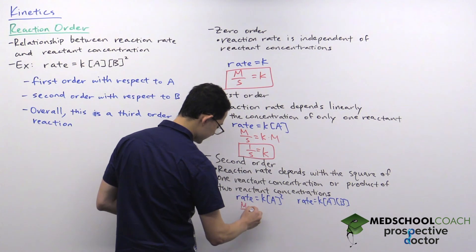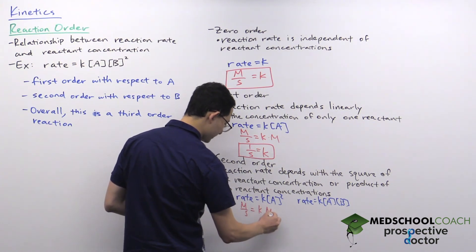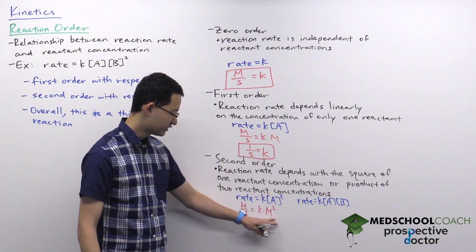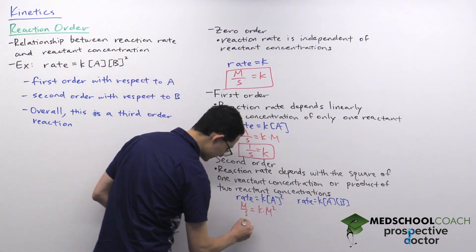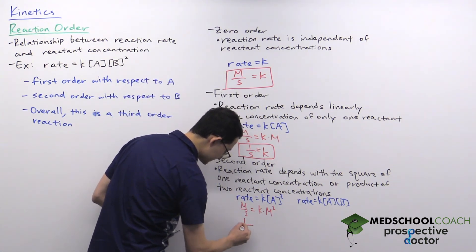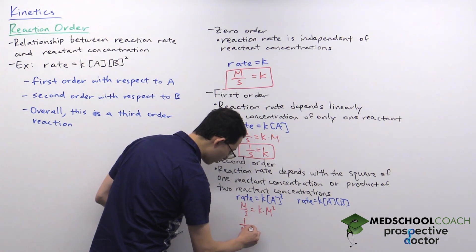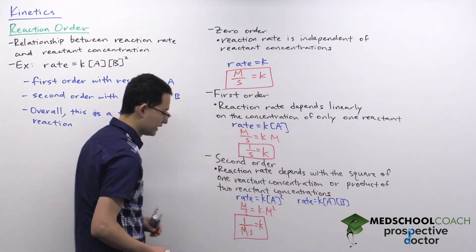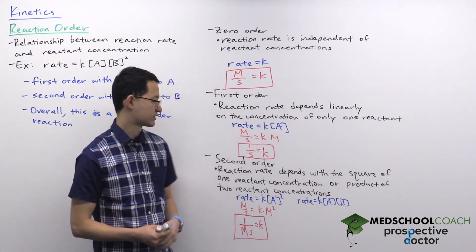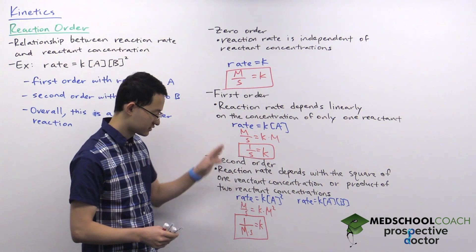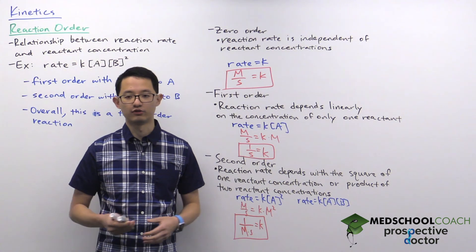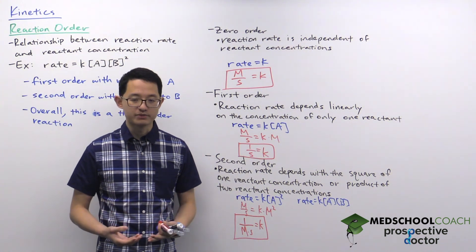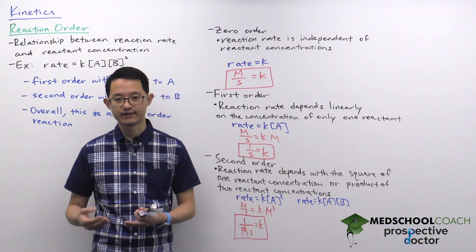The reaction rate is always molar per second. For a second order reaction, we have concentration squared, which is molar squared. Dividing molar per second by molar squared gives units of 1 over molar-second for the rate constant K. This is again different from zeroth and first order rate constants. You can continue this process for higher order reactions. The key idea is that reaction order describes how the rate of a reaction depends on reactant concentrations.